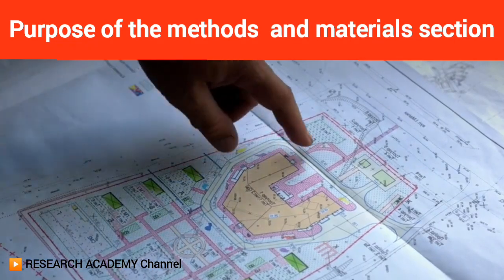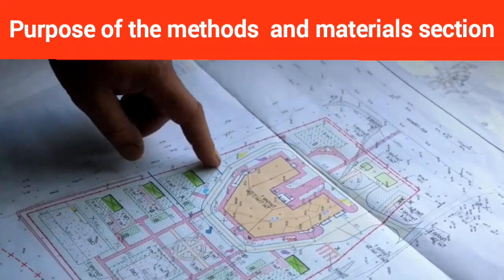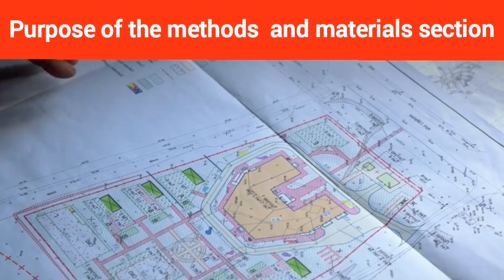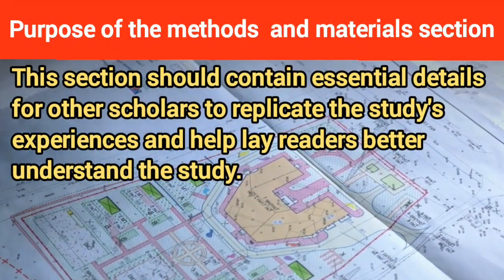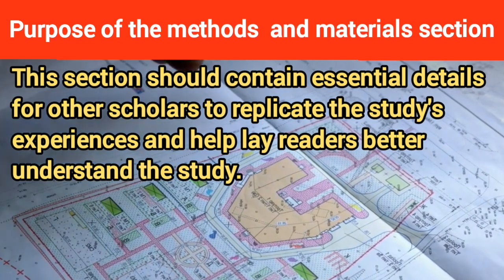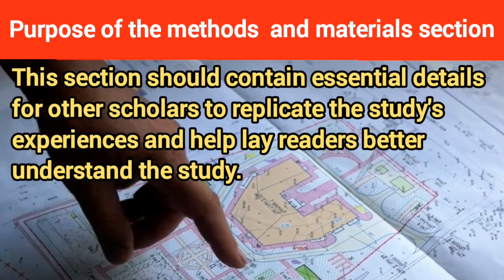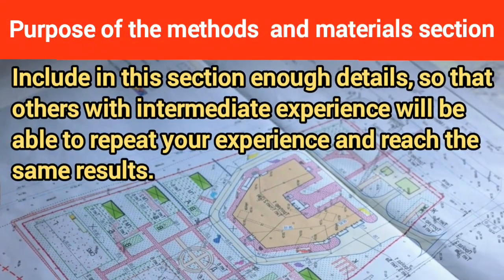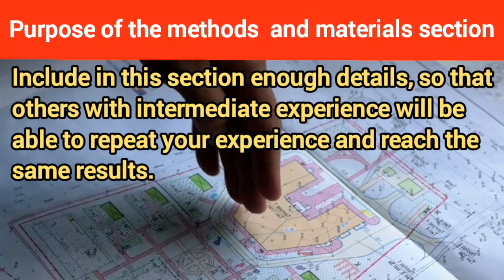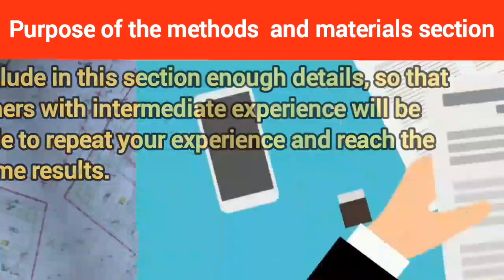Begin this section by defining the scientific method that you followed, indicating the reason for choosing it and not others. This section of the manuscript should contain essential details for other scholars to replicate the study's experiences and help lay readers better understand the study. Remember to include in this section enough details, so that others with intermediate experience will be able to repeat your experience and reach the same results.